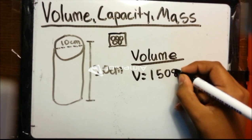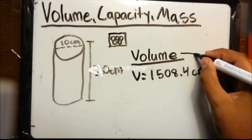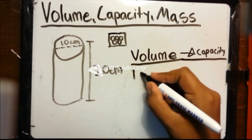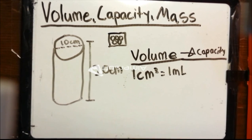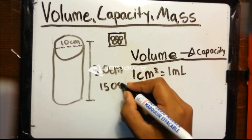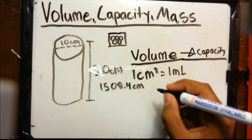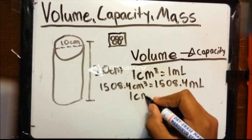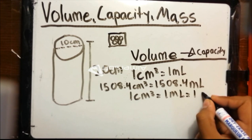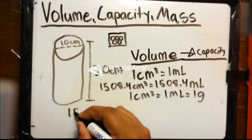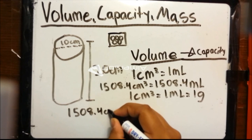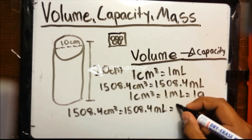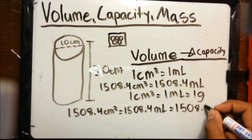Now that you know that the volume is 1,508.4 cubic centimeters, you need to convert it into milliliters to figure out the capacity. Remember the conversion: every cubic centimeter equals 1 milliliter, which means 1,508.4 cubic centimeters equals 1,508.4 milliliters. Not only does 1 cubic centimeter equal 1 milliliter, but it also equals 1 gram, which means 1,508.4 cubic centimeters also equals 1,508.4 grams.